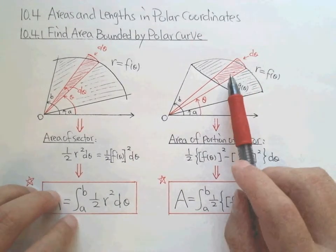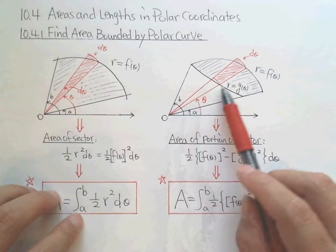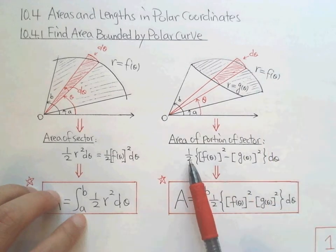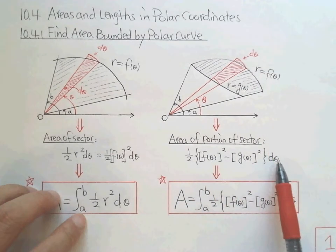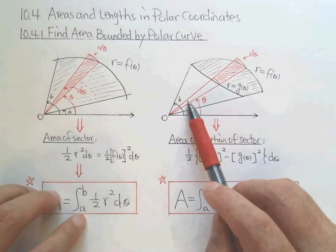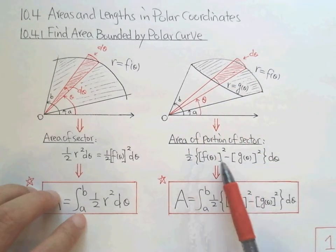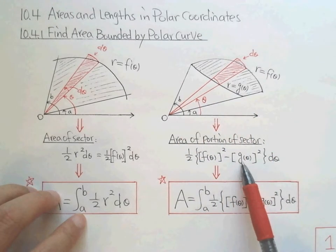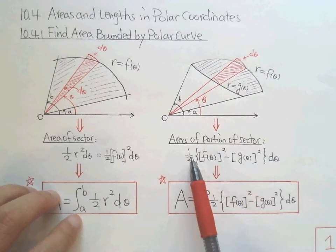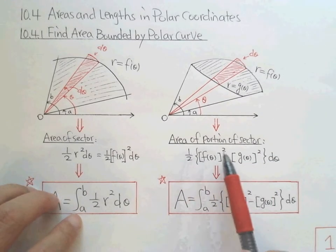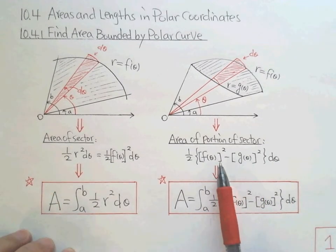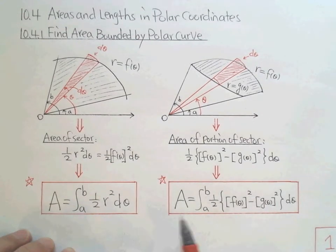So how do we find it? The big sector is one half times the big radius f(θ) squared times dθ, minus the small sector which is one half times the bottom radius g(θ) squared times dθ. If we factor out the common factor one half, we get our expression. Then for the total area, just integrate from A to B.